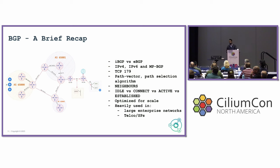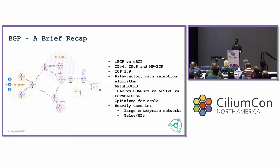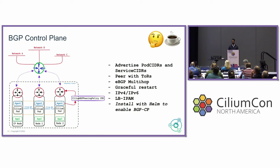BGP operates at the TCP layer, so it expects an underlying connection to what we call a neighbor. Neighbors form peer relationships to exchange routes — every link between two routers represents a neighbor-peer relationship. BGP has made its way into a variety of different networks, and it's also made its way into Cilium.